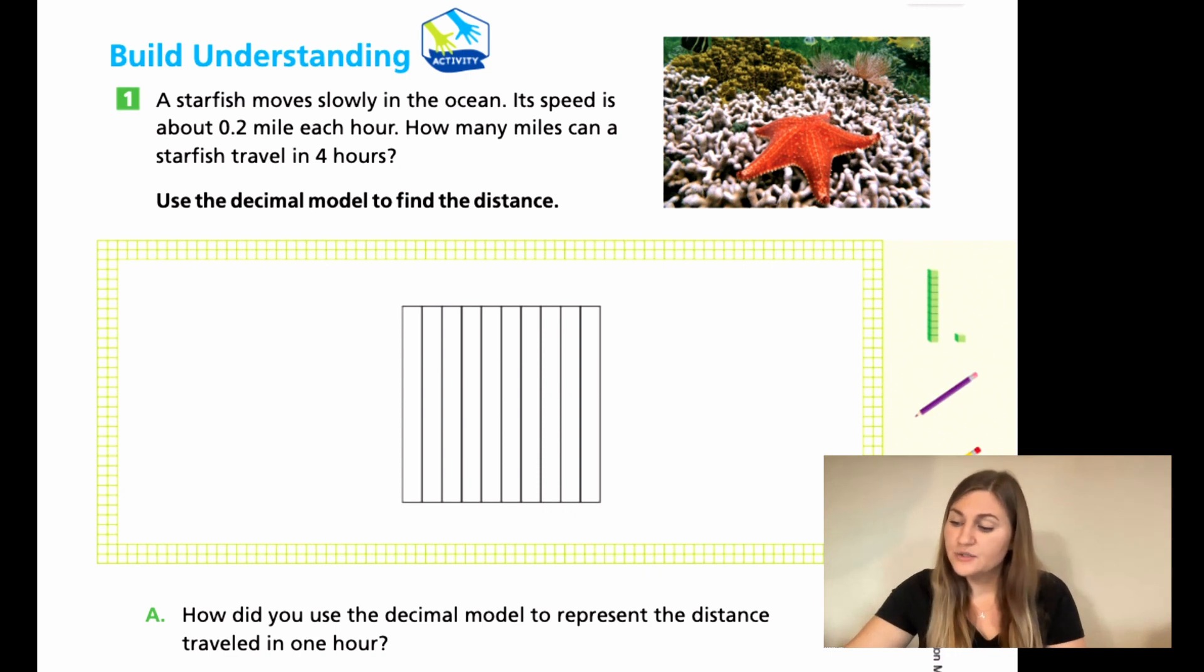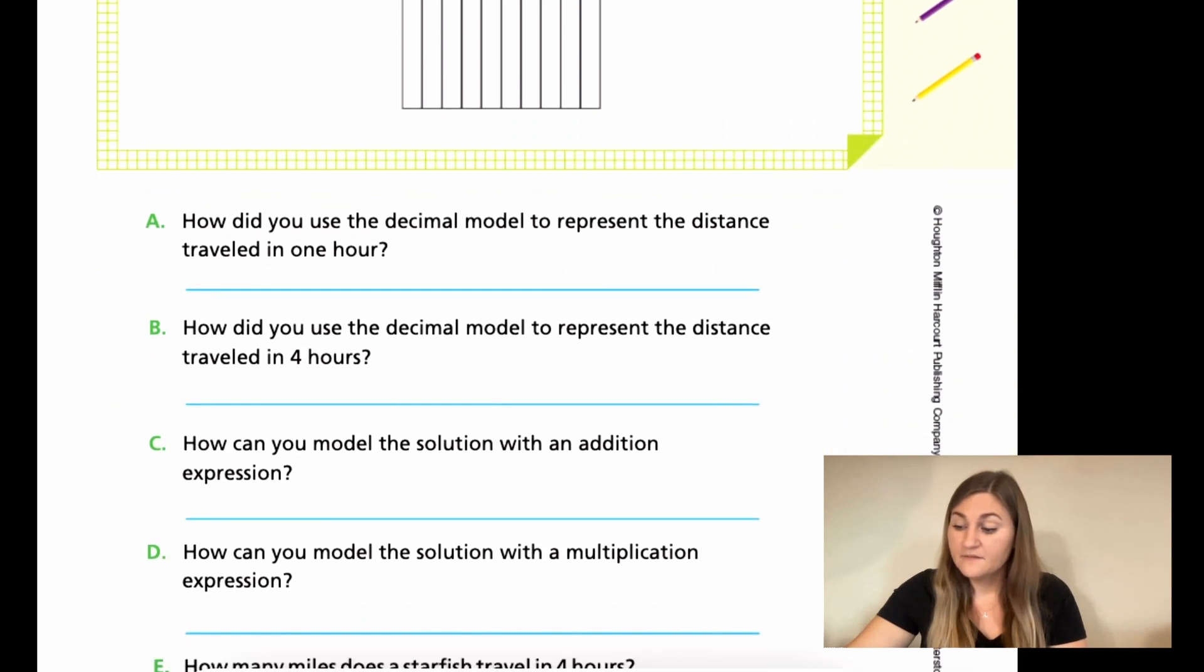And then for A, how did you use the decimal model to represent the distance traveled in one hour? For B, what did you do to show all four hours? For C, how can you model the solution with an addition expression? Remember it's repeated addition. For D, how are you going to write the solution with multiplication? Now write a multiplication question.